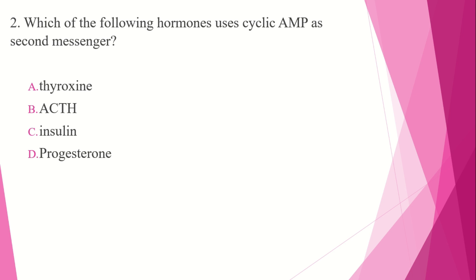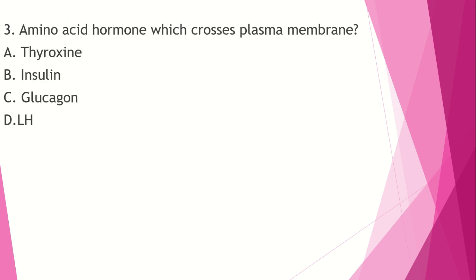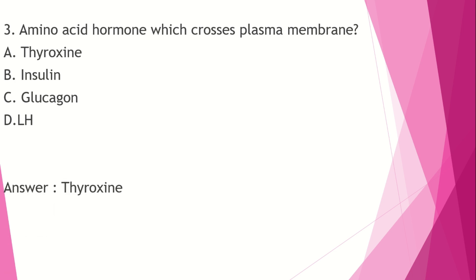The amino acid hormone which crosses the plasma membrane: Option A: thyroxine. Option B: insulin. Option C: glucagon. Option D: LH (luteinizing hormone). The answer is thyroxine. It is the only amino acid hormone that crosses the plasma membrane and acts in the nucleus.